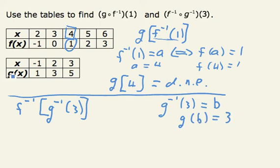So if we look at this table and find the number 3, we see that G of 2 is 3. So that B must be 2.